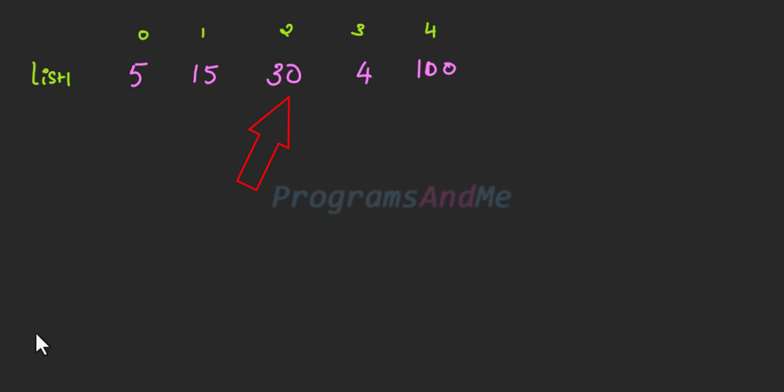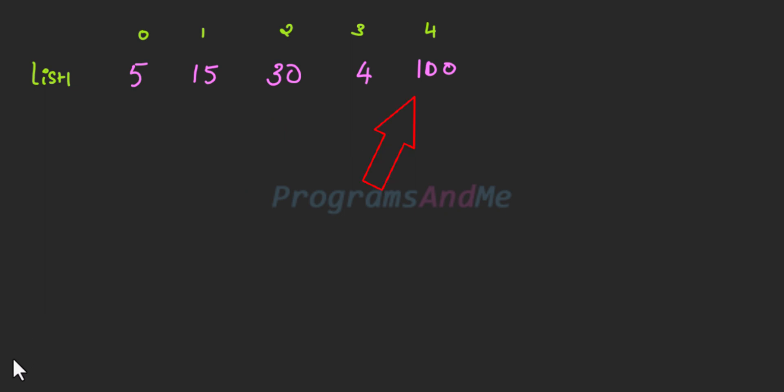When an element is not greater than my maximum value, do nothing. Go to the next element and compare 30 with 100 — here 100 is greater, so my maximum value is now 100. So we take the first element as the maximum value, compare it with all other elements, and if we find a greater value than mymax, we take that greater value as the new maximum value.